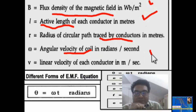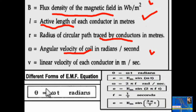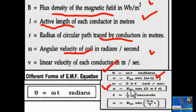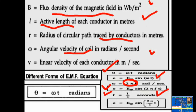Omega (ω) is the angular velocity of the coil in radians per second, and v is the linear velocity of each conductor in meters per second. Since θ = ωt, we can write e = Em sin(ωt). Also, ω = 2πf radians per second, where f is the frequency in cycles per second. Substituting, e = Em sin(2πft). Further, since f = 1/T, we get e = Em sin(2π/T · t) — this is the third form of the equation.